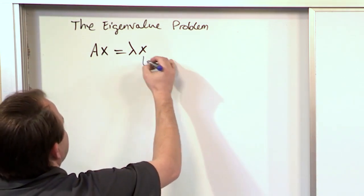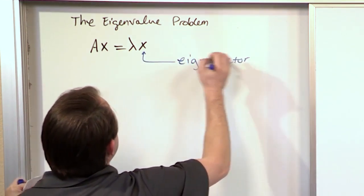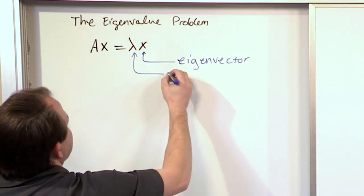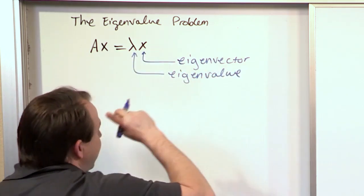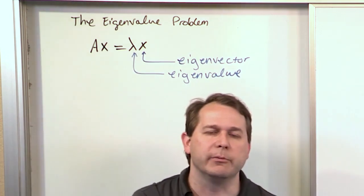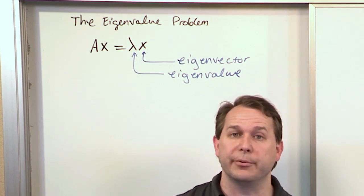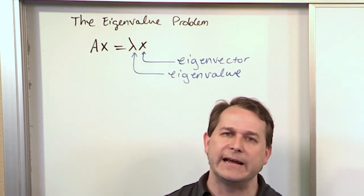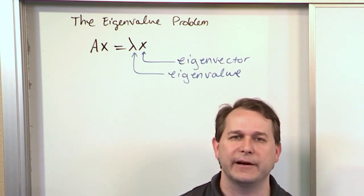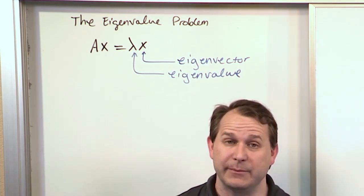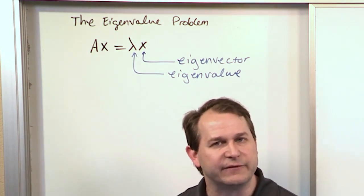This x here is called the eigenvector, and this lambda here is called the corresponding eigenvalue. The way this works in real problems is: in order to find the eigenvectors, you have to first find the eigenvalues — those are just numbers. Once you find the eigenvalues, then you can find the corresponding eigenvectors.